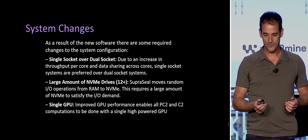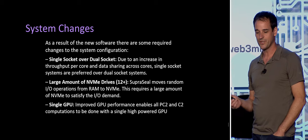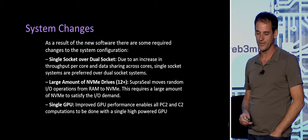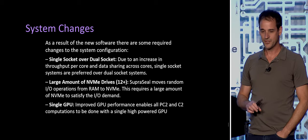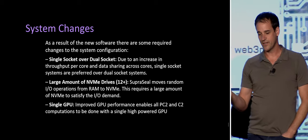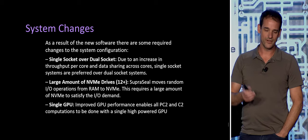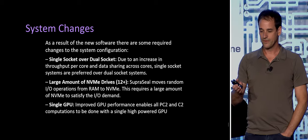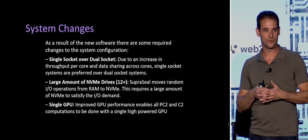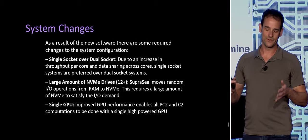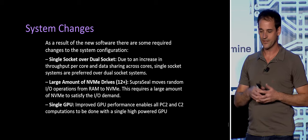Looking at the system architecture changes this drives: the underlying system performing these computations needed to change. We shifted from dual-socket to single-socket servers. The software today requires tight interaction and coordination between cores; with dual-socket, that's tricky because of NUMA, the disparate nodes, and the latency between them — so single-socket works well for that.